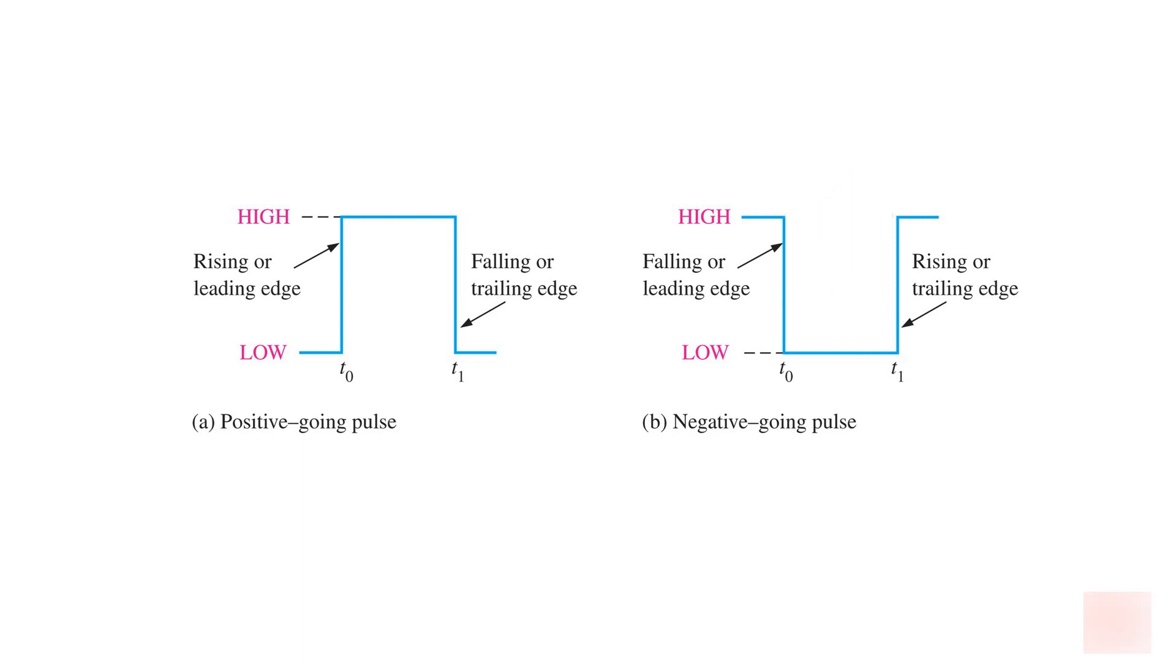So to sum up, whether you're looking at a positive going pulse or a negative going pulse, the leading edge is on the left and the trailing edge is on the right.